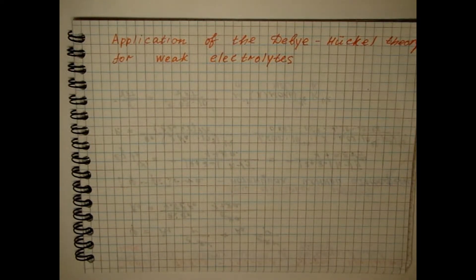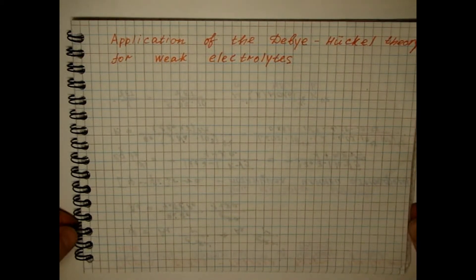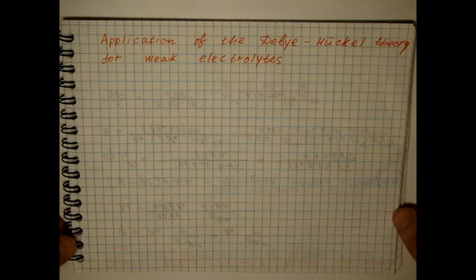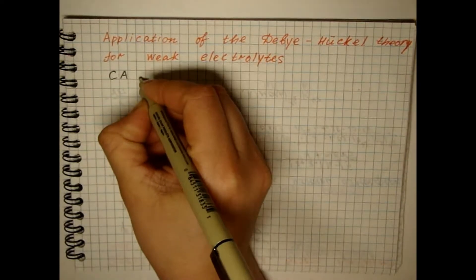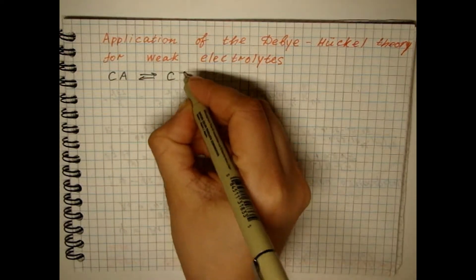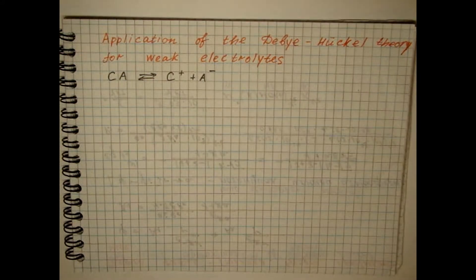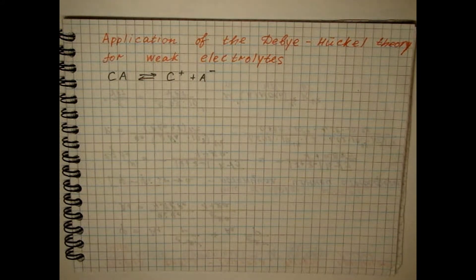Ion-dipole and ion-ion interactions should also be considered in solutions of weak electrolytes. Therefore, for a weak electrolyte dissociating by the equation, the law of mass action will be written as